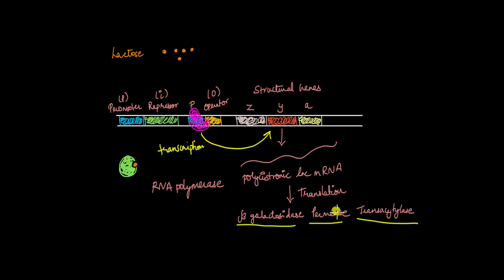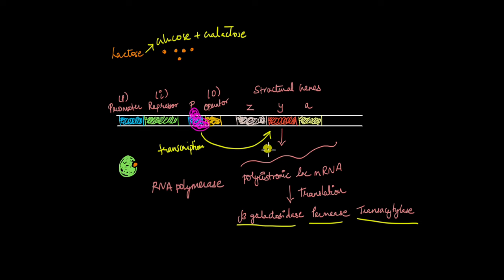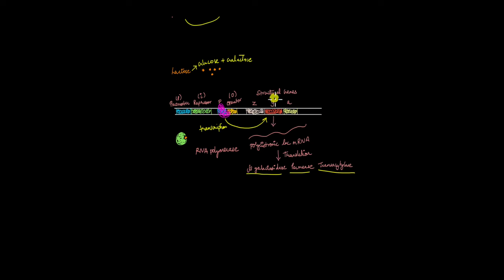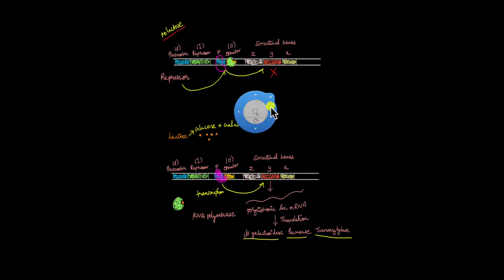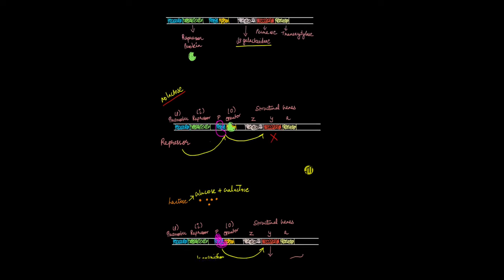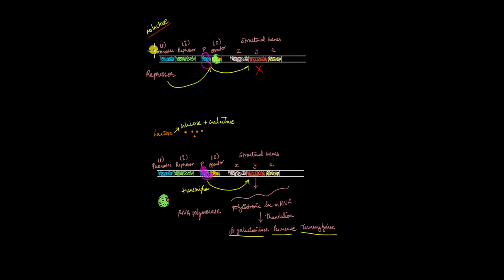When the enzymes are produced, beta-galactosidase is going to cleave lactose into glucose and galactose. This is how E. coli regulates the expression of these three genes in two scenarios — when lactose is present and when lactose is not present — as a mechanism to conserve energy.